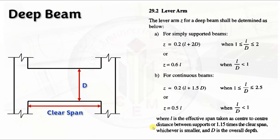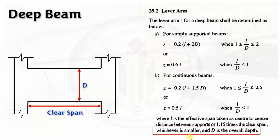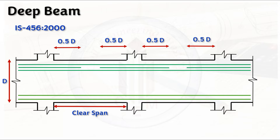Here, d is the overall depth. In deep beams, d is not the effective depth — we consider the overall depth. For reinforcement termination, the distance of 0.5d uses the overall depth of the deep beam.